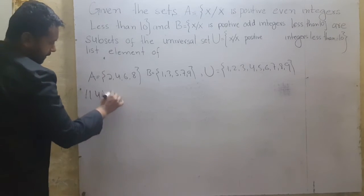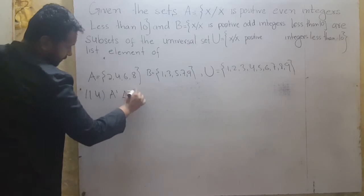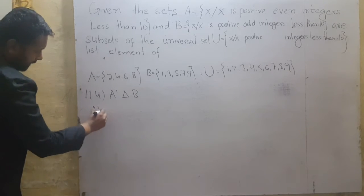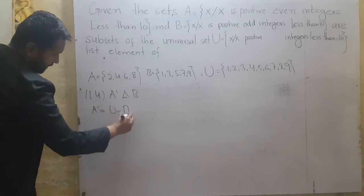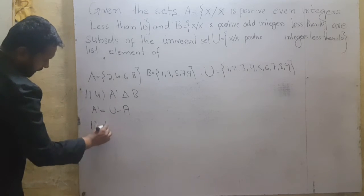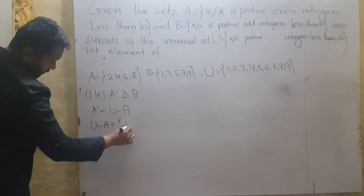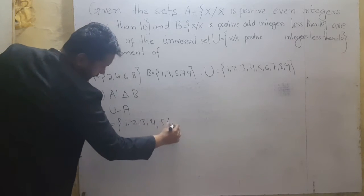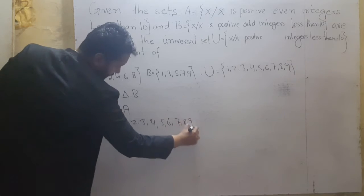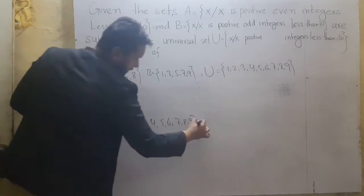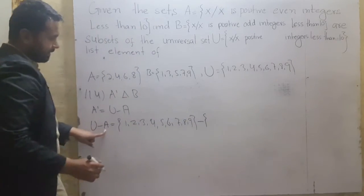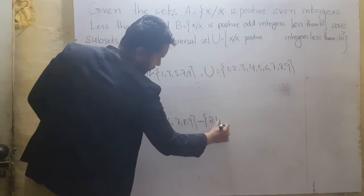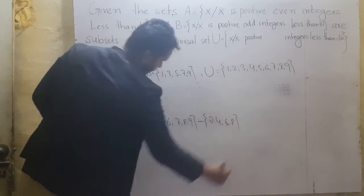Question number 14: A complement symmetric difference B. First we will solve A complement. A complement equals universal set minus given set A, i.e., U minus A. Universal set U has elements {1, 2, 3, 4, 5, 6, 7, 8, 9} minus set A elements {2, 4, 6, 8}.